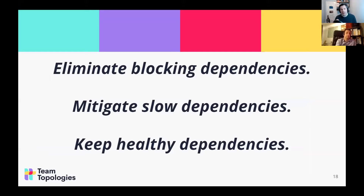The key thing is we need to eliminate blocking dependencies — dependencies that get in the flow of change. There will always be dependencies; we're always using some kind of platform, infrastructure, or tooling, and many of those can be healthy. What we need to do is avoid the ones that end up blocking flow. The book Team Topologies is very much focused on fast flow of change, so we're looking to find team dependencies that block it. We can mitigate slow dependencies with workarounds or by changing how we schedule work, and keep dependencies that just work for us.